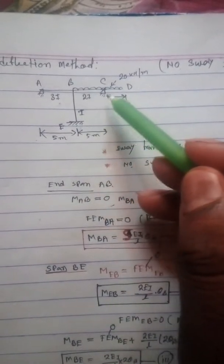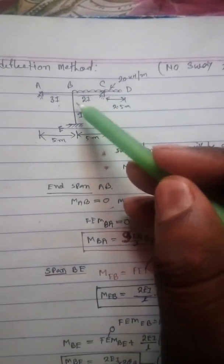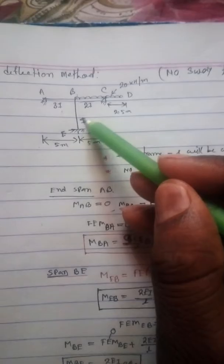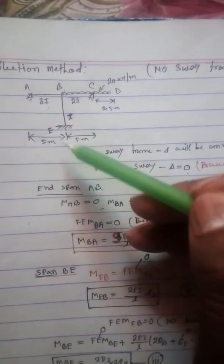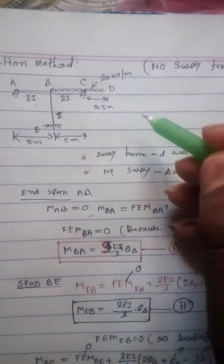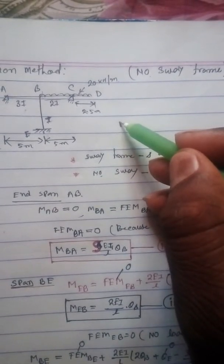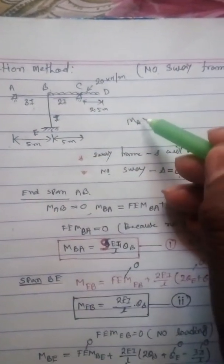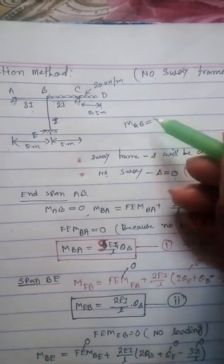For portion AB, its moment of inertia is 3I. For portions BC and CD, the inertia is 2I. And for the portion BE, the inertia is I.